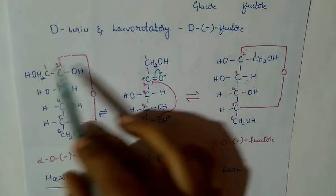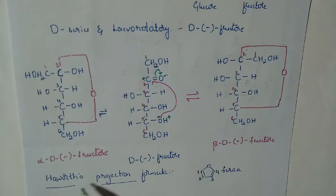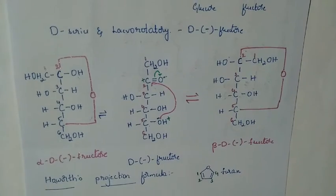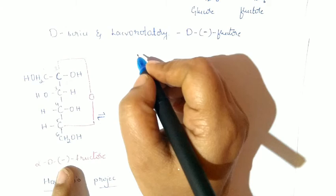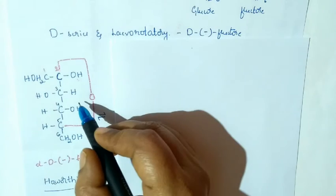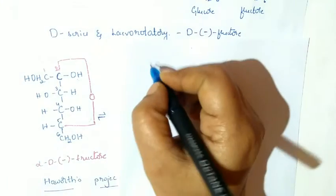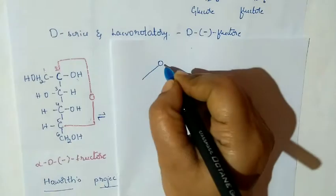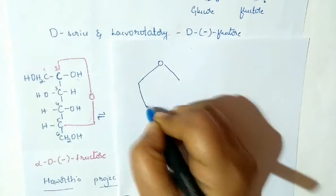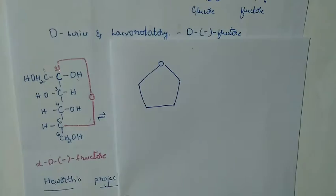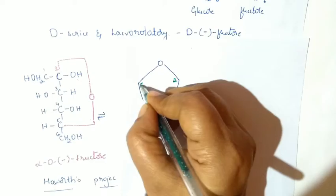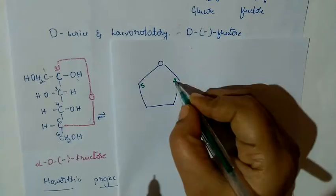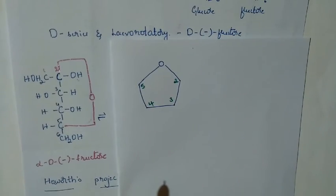This is the Haworth projection formula, written the same way as for glucose. So observe this is the Haworth structure for alpha D-minus fructose. The second carbon and fifth carbon are bonded through oxygen. We have second, third, and fourth carbons in the ring. I hope it is clear.